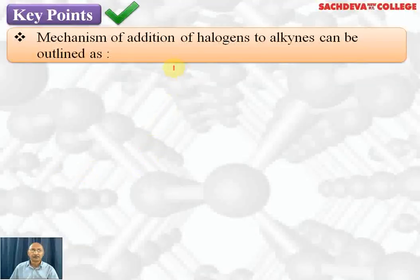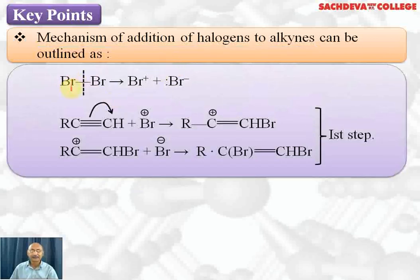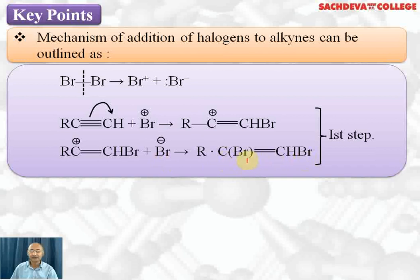Let's take up some important points regarding the mechanism of addition of halogens to alkynes. The first step is heterolytic fission of Br2, which leads to Br⁺ and Br⁻. The pi electrons shift to one carbon, and Br⁺ attacks the other carbon, changing the triple bond to a double bond. A positive charge forms on that carbon, which then reacts with Br⁻, resulting in an unsaturated dibromo compound.